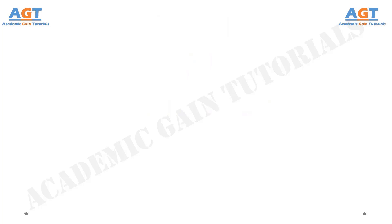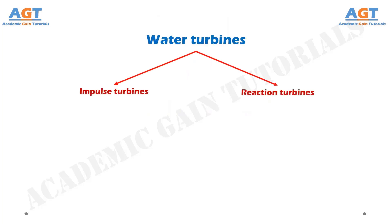Welcome to academic game tutorials. In this video we will discuss in detail about different types of water turbines. The water turbines are mainly of two types: impulse turbines and reaction turbines.